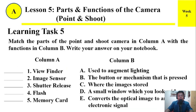Learning Task 5: Match the part of the point and shoot camera in Column A with its function in Column B. Write your answer in your notebook. The items are: 1. Viewfinder, 2. Image sensor, 3. Shutter release, 4. Flash, 5. Memory card. The choices are: A. Used to augment lighting. B. The button or mechanism that is pressed. C. Where the image is stored. D. A small window which you can look with one eye. E. Converts the optical image to an electronic signal.